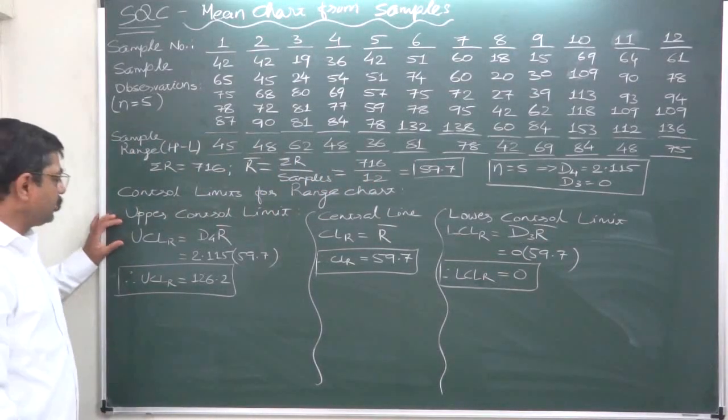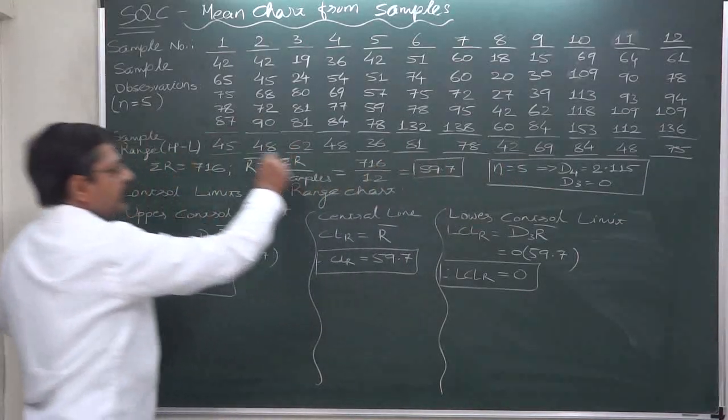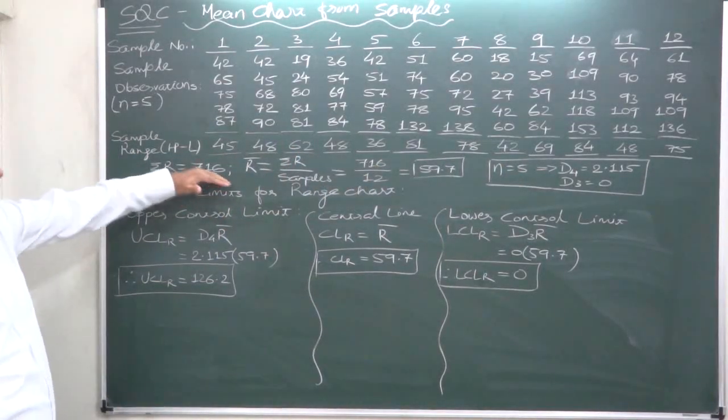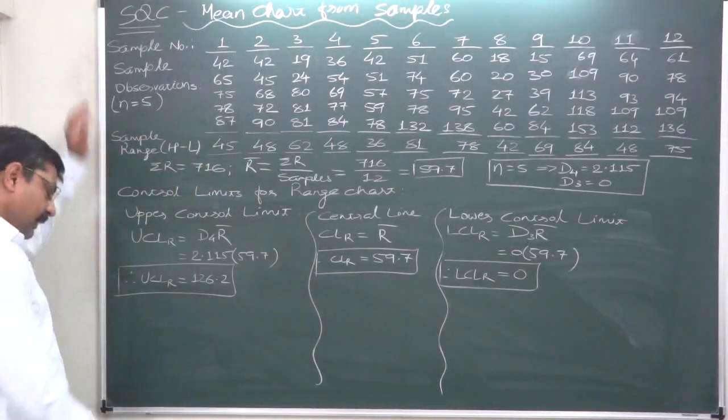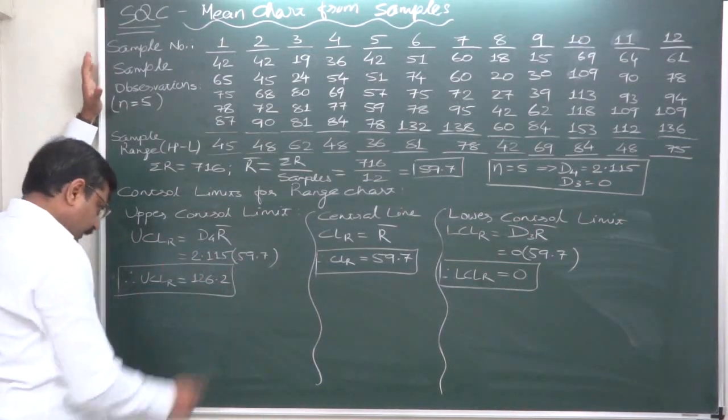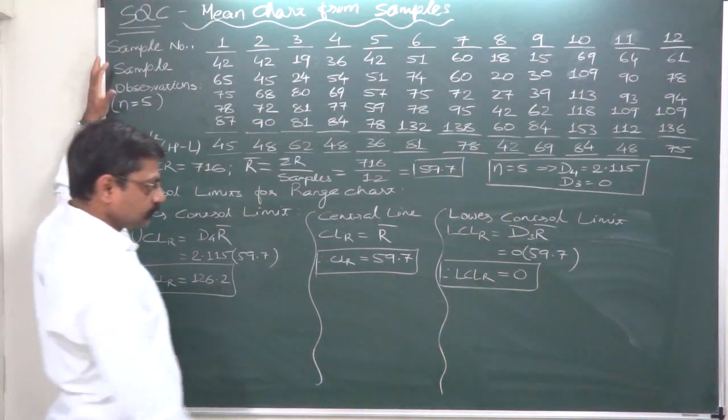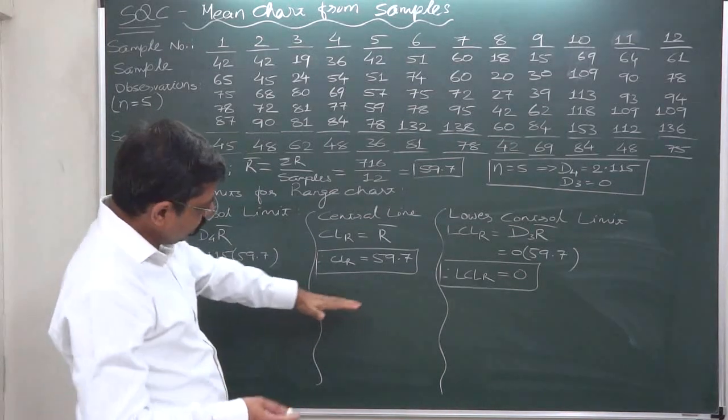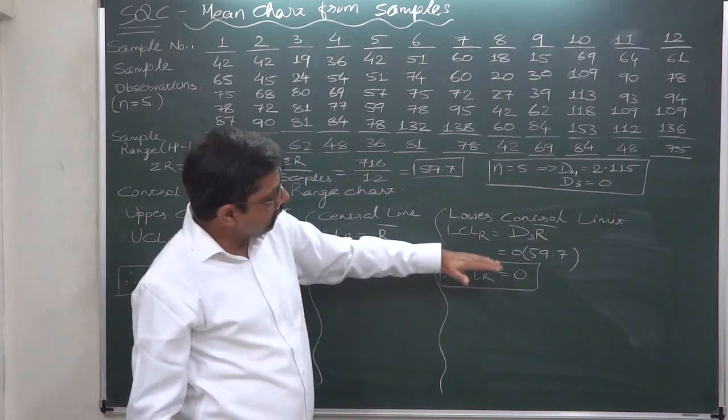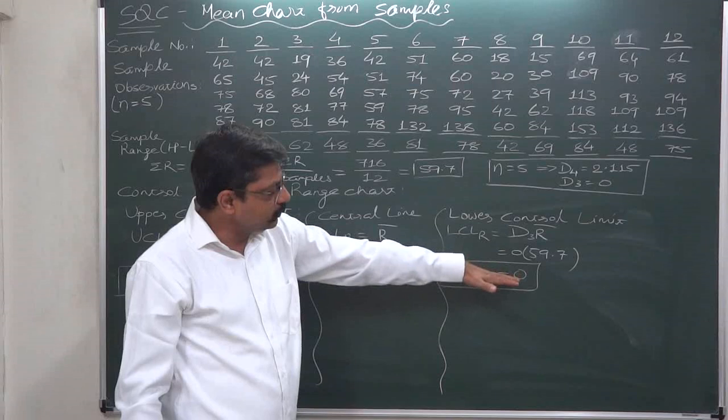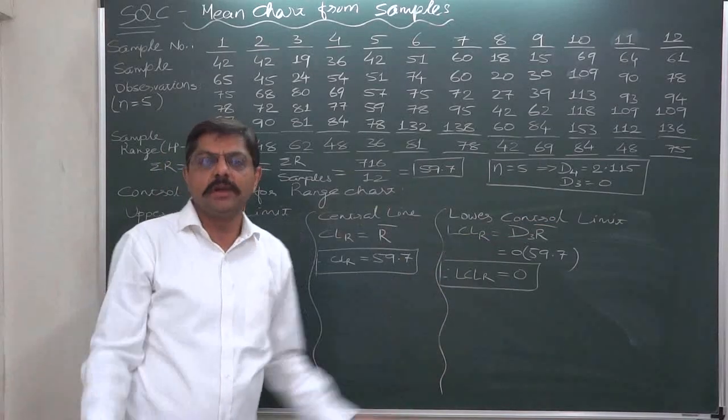First calculate upper control limit: UCL equals D4 into R bar. R bar is the mean of all the sample ranges. Total of sample ranges is 716 divided by number of samples 12, so the mean range comes to 59.7. D4 is 2.125 into 59.7, which gives us 126.2. Central line is 59.7. Lower control limit is D3 into R bar. For sample size 5, D3 is 0, so 0 into 59.7 comes to 0. The horizontal axis itself becomes the lower control limit.